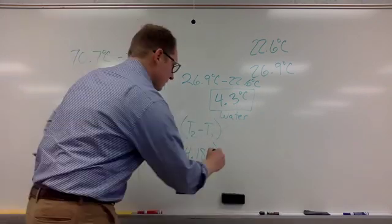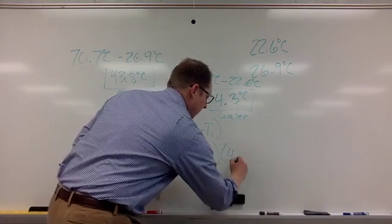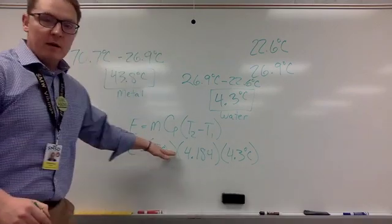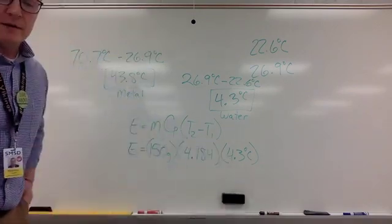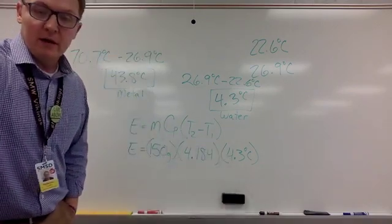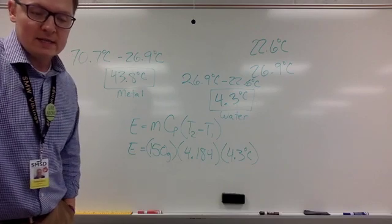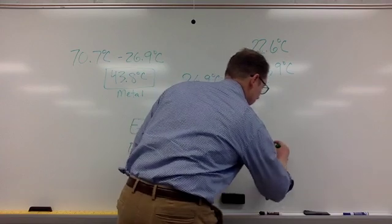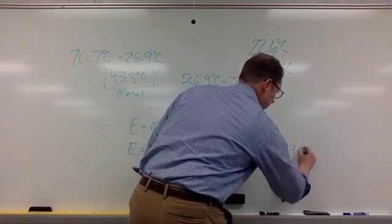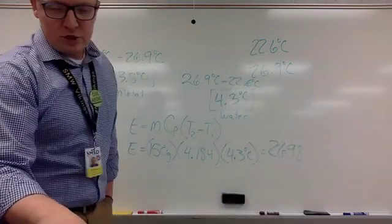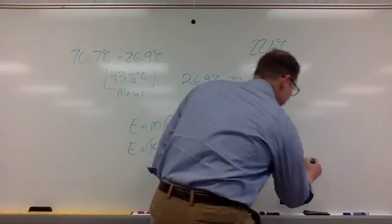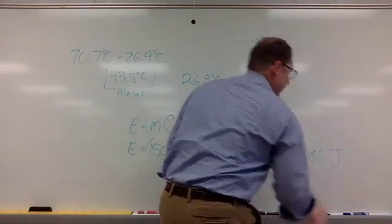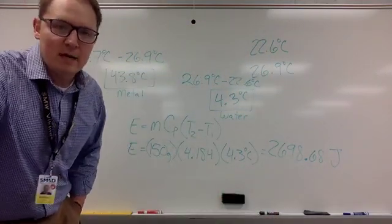These three numbers just all need to be multiplied together and it's going to give you a fairly large number. 2698 and some change, looks like 2698.68.